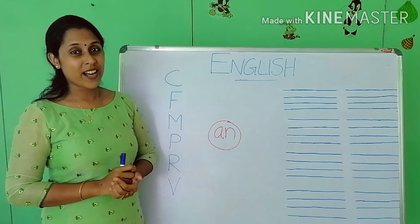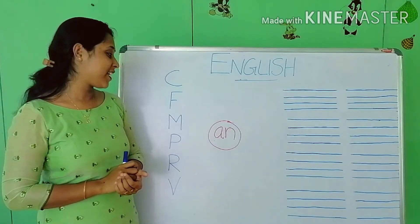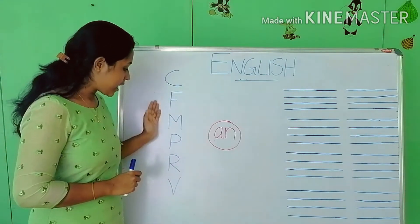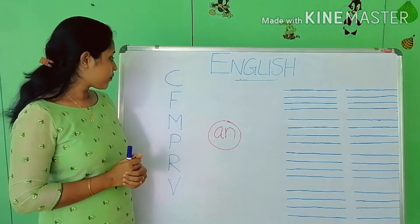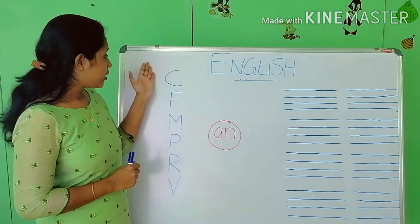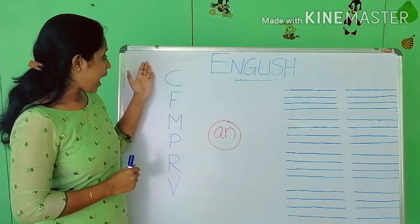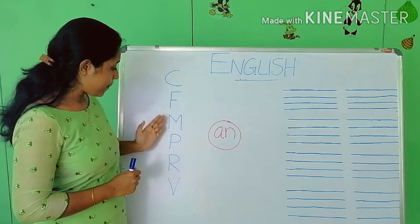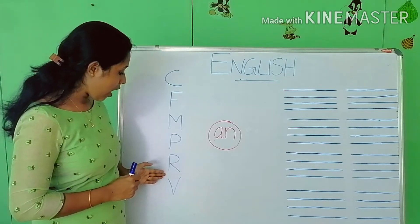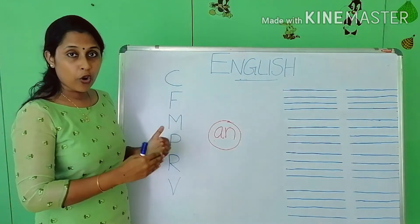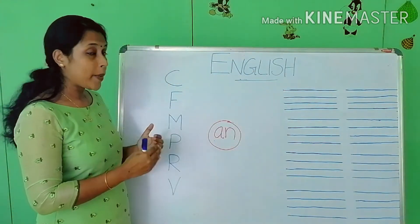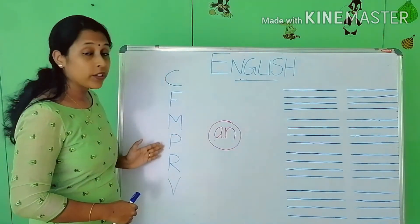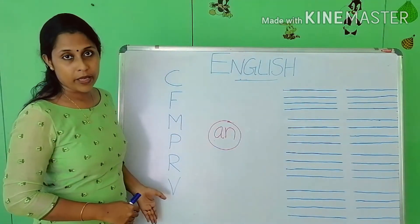Shall we start? Ready? First look at these letters — alphabets. We have C, F, M, P, R and D. We are going to make words with each of these alphabets.